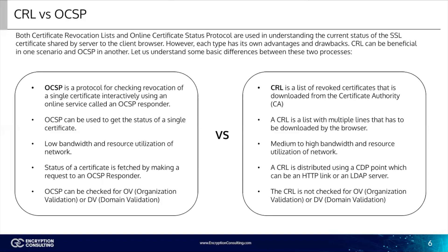OCSP, as it works on a request basis, has comparatively low bandwidth and resource utilization of network when compared to CRL, where a total list of revoked certificates has to be downloaded. The status of a certificate is fetched by making a request to an OCSP responder. A CRL is distributed using a CDP point, which can be an HTTP link or an LDAP server. OCSP can be checked for OV — organization validation — or DV — domain validation — whereas it is not possible for CRL to do this.